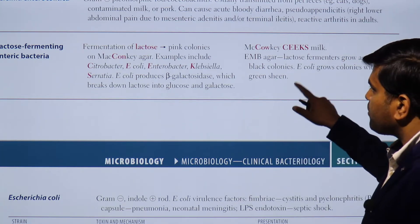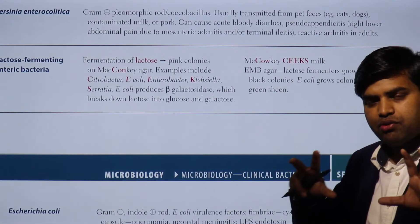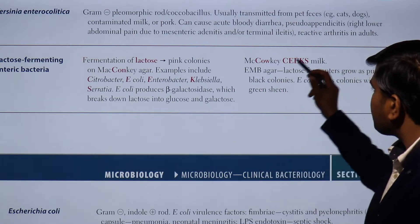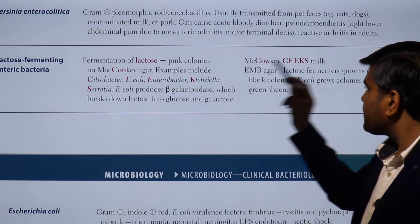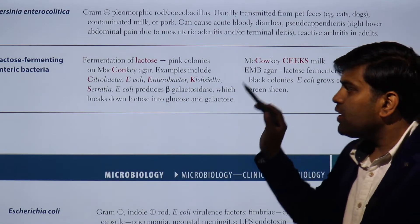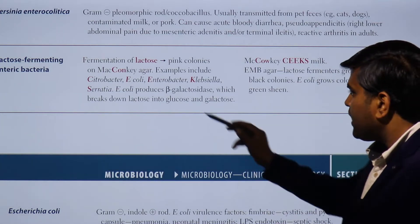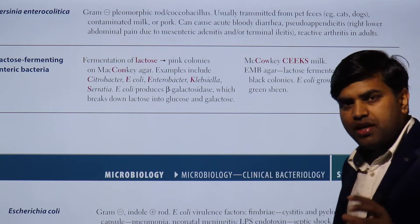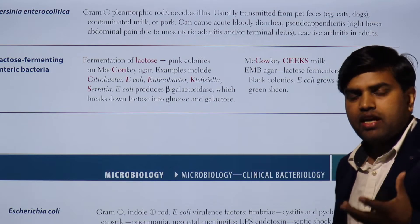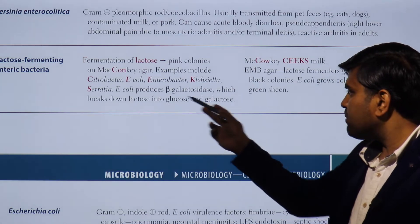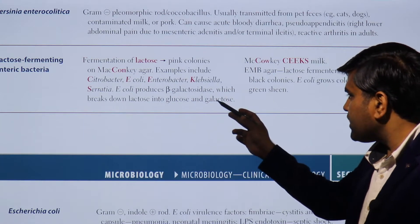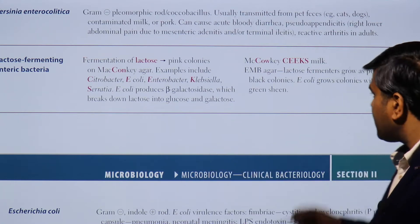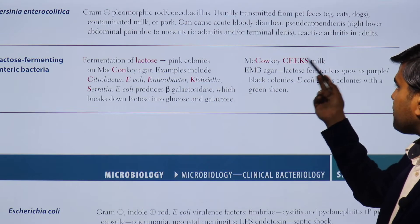If you remember from our previous diagram on lactose fermenting versus non-lactose fermenting gram-negative bacteria, the same CHICK formula applies: Citrobacter, Enterobacter, E. coli, Klebsiella, and Serratia. E. coli produces beta-galactosidase, which breaks down lactose into glucose and galactose. This enzyme is why they can ferment lactose.